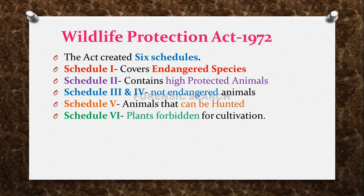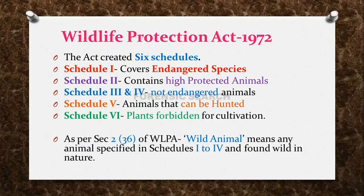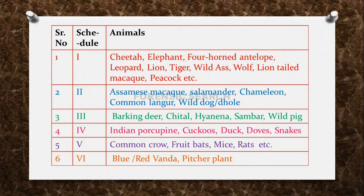As per Section 2, subsection 36 of the Wildlife Protection Act, wild animals means any animal specified in schedules 1 to 4 and found wild in nature. Schedule 5 contains animals that can be hunted, and Schedule 6 is for plants forbidden for cultivation.